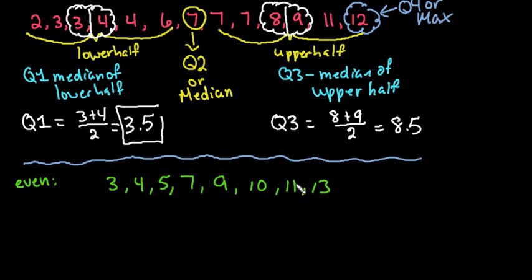What we would do is we would first find Q2. So Q2 would be in between, that would be our median. So we would cut our data in half. Q2 would be the median of 7 and 9. So we would do 7 plus 9 divided by 2, which is 8. So that's our Q2. This is also known as the median.